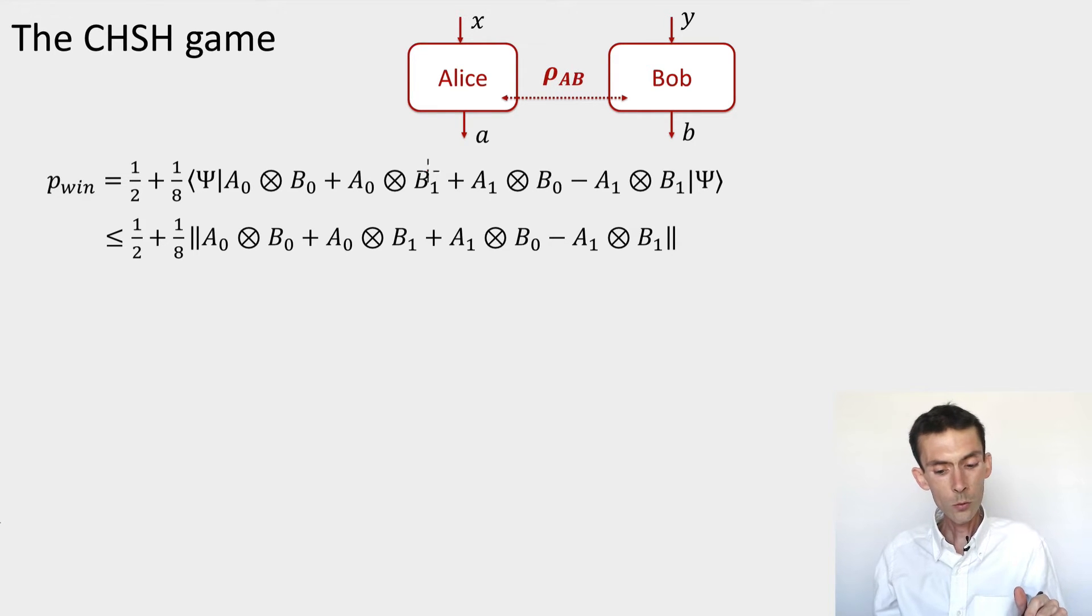Let's look at our maximum winning probability and put bounds on this maximum winning probability. The first thing that I can do is, whatever measurements Alice and Bob are performing, once I fix their measurements, it's clear what the best state they should use. They should just look at this operator here. It's an operator that acts on the tensor product of their Hilbert spaces and take a vector psi that's an eigenvector of this operator associated with the largest eigenvalue. If this is what I take, then the expression will evaluate to half plus one-eighth times the norm of the operator.